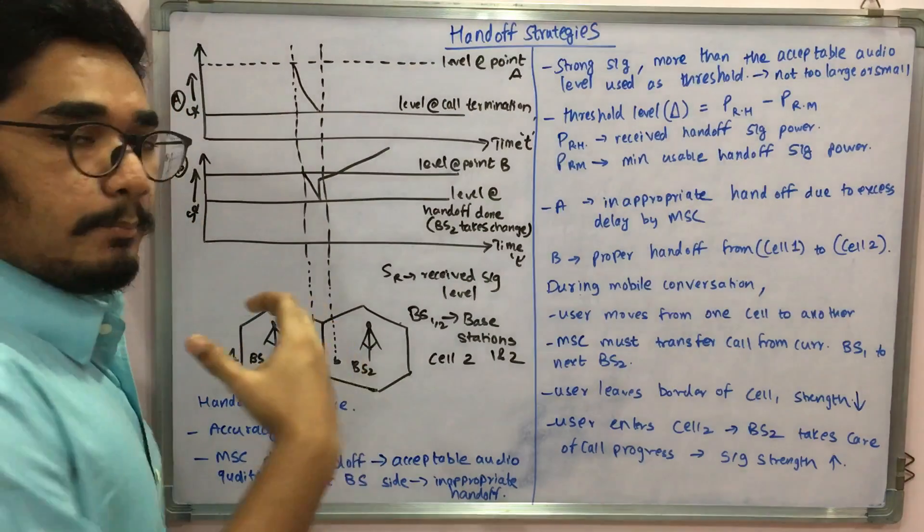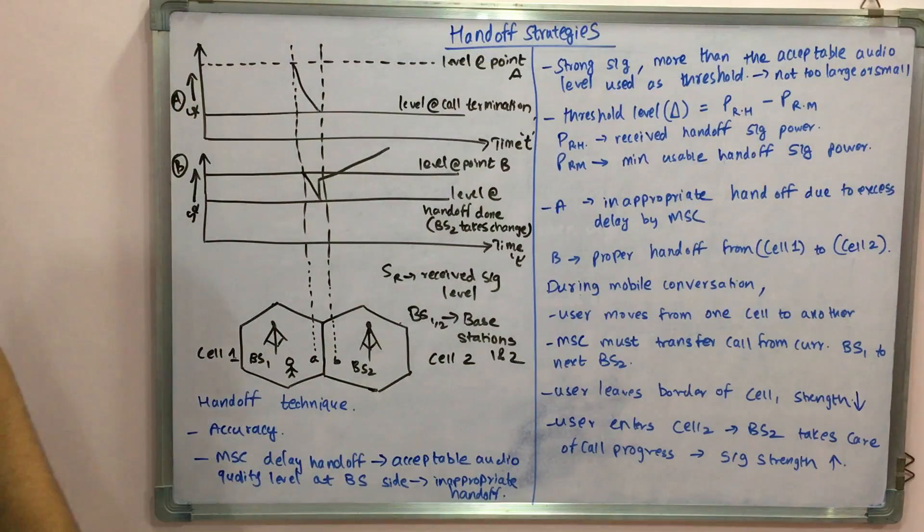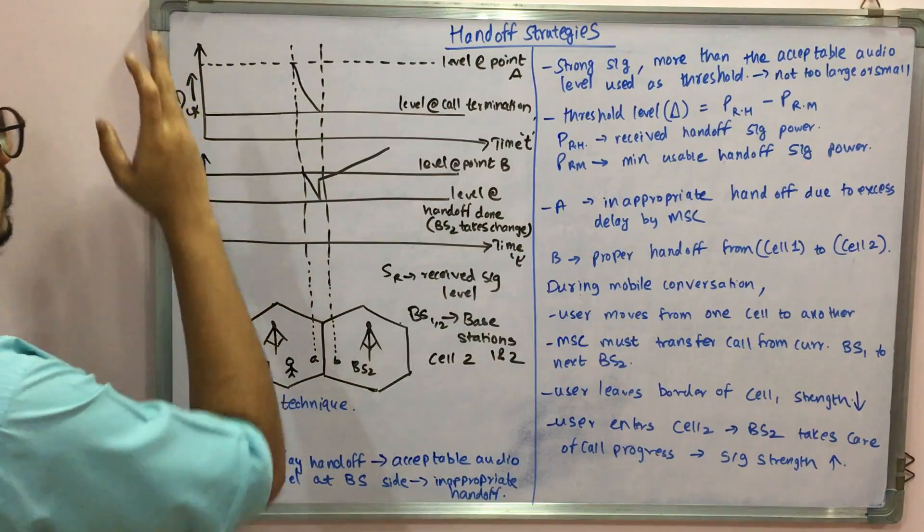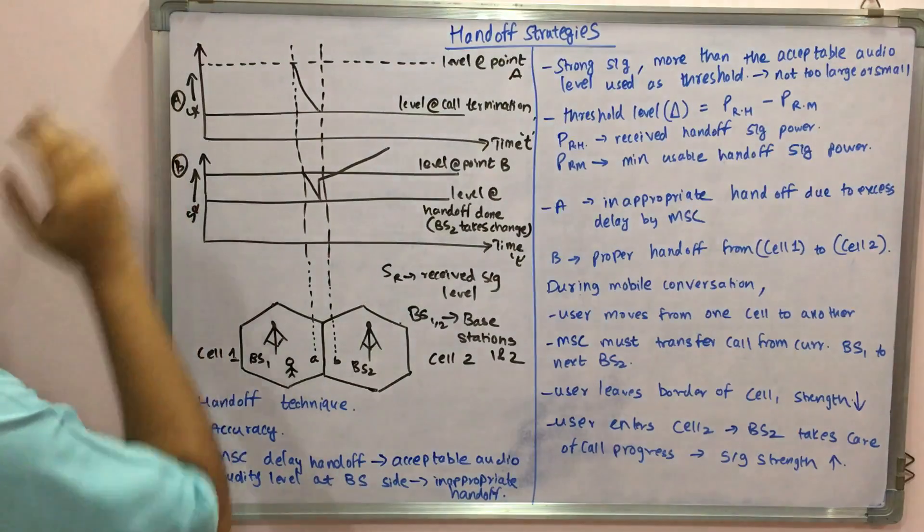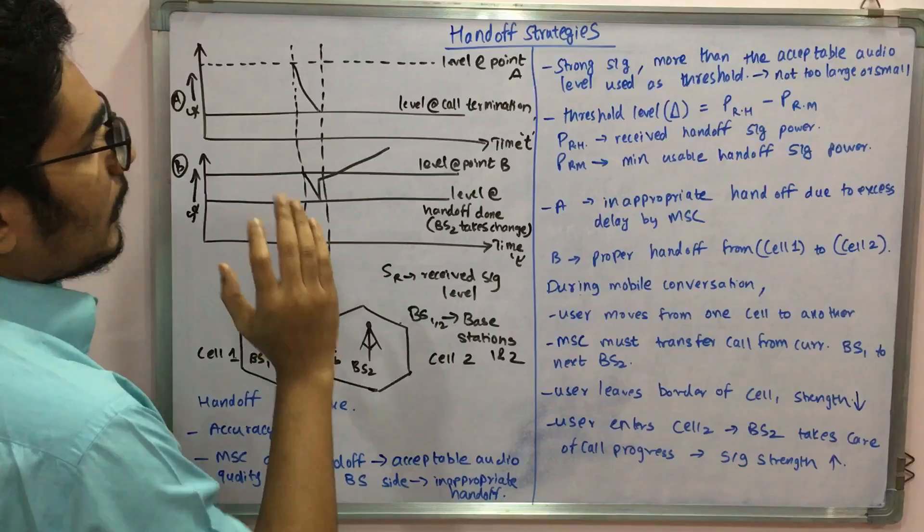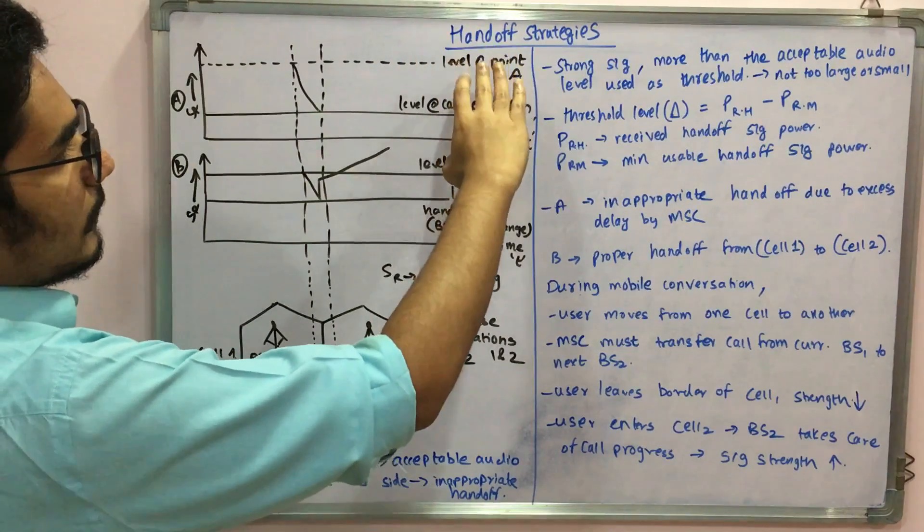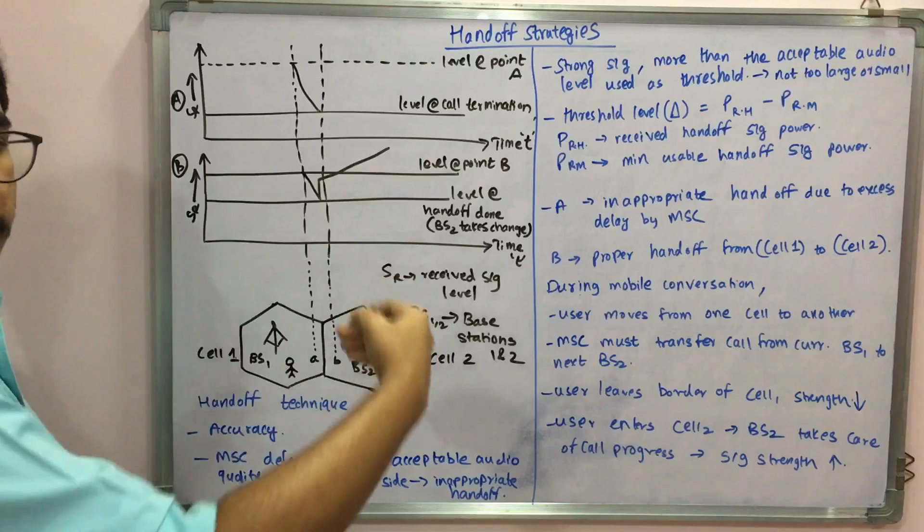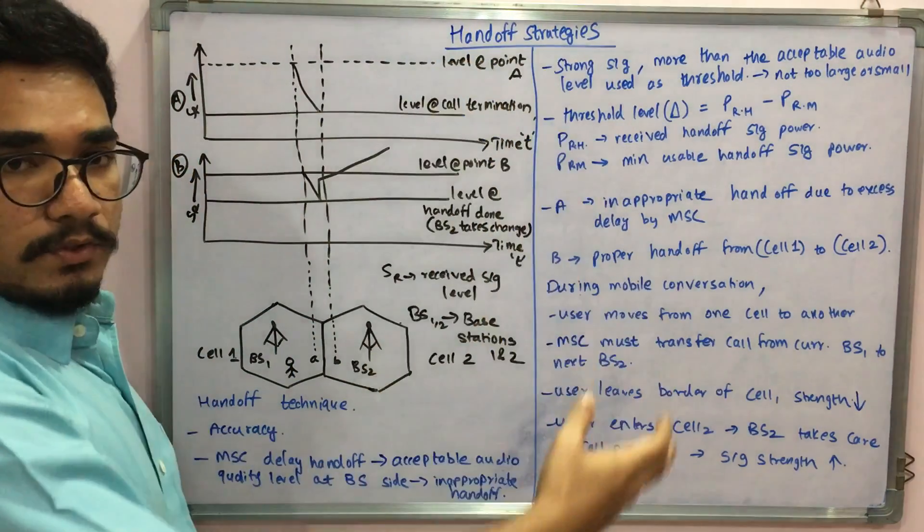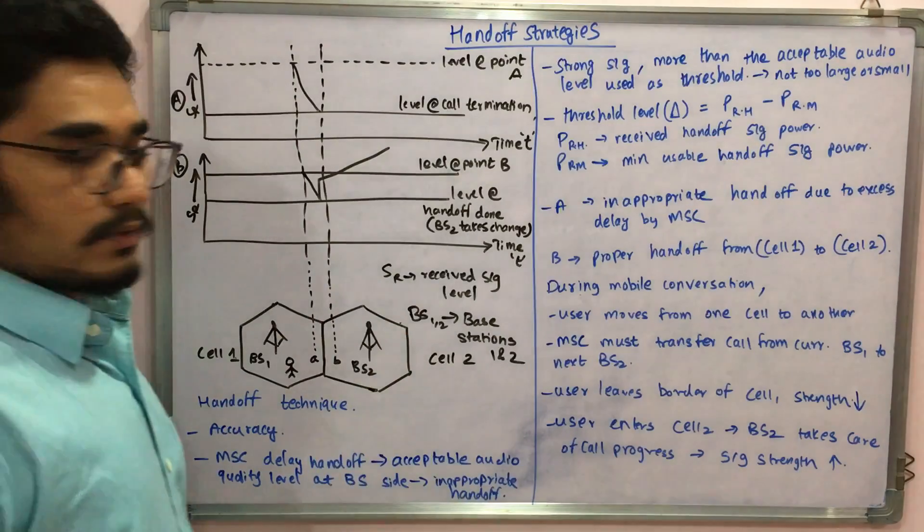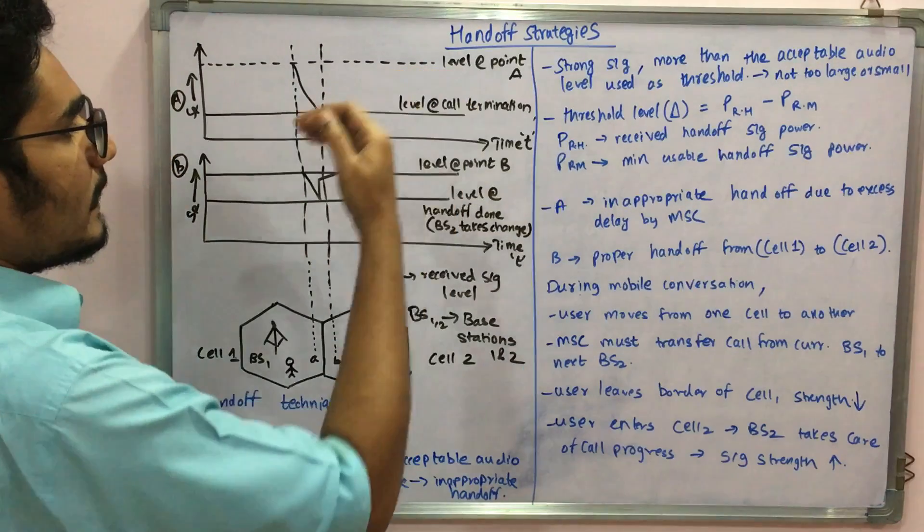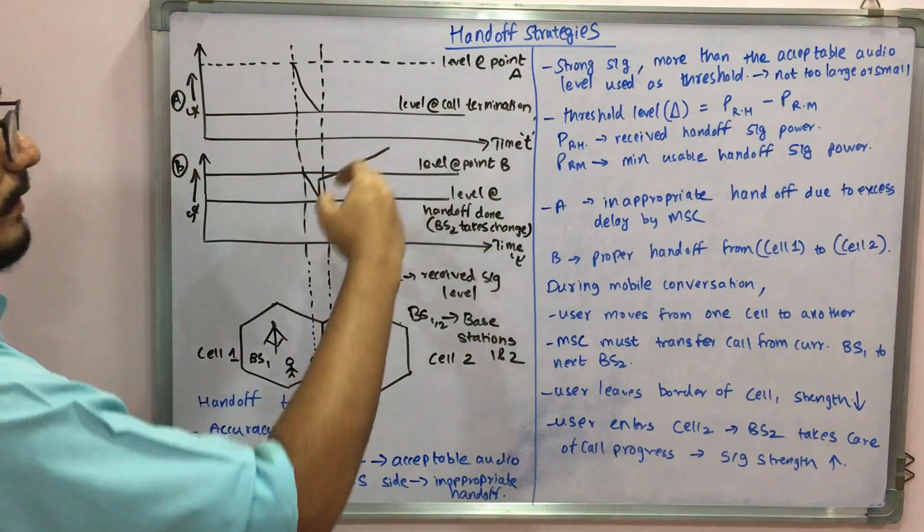You can summarize this with the help of this graph. Here you can see the received signal level at the y-axis and at the x-axis you have time. At some level, at point A, at a later period of time, the call termination happens. Like we saw before when I demonstrated, that was the level at which the call terminated.